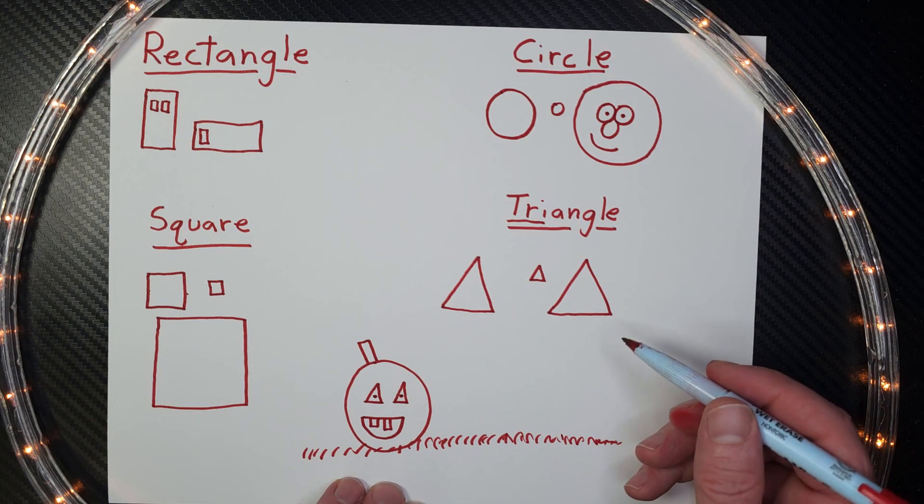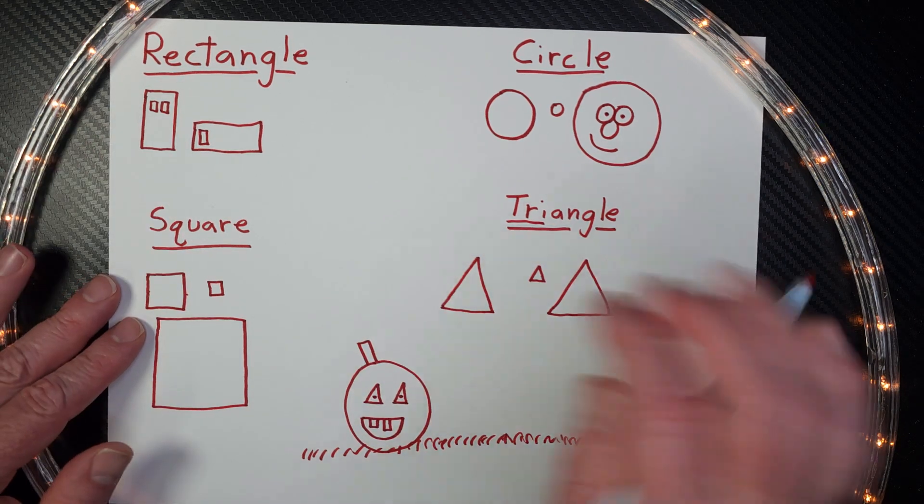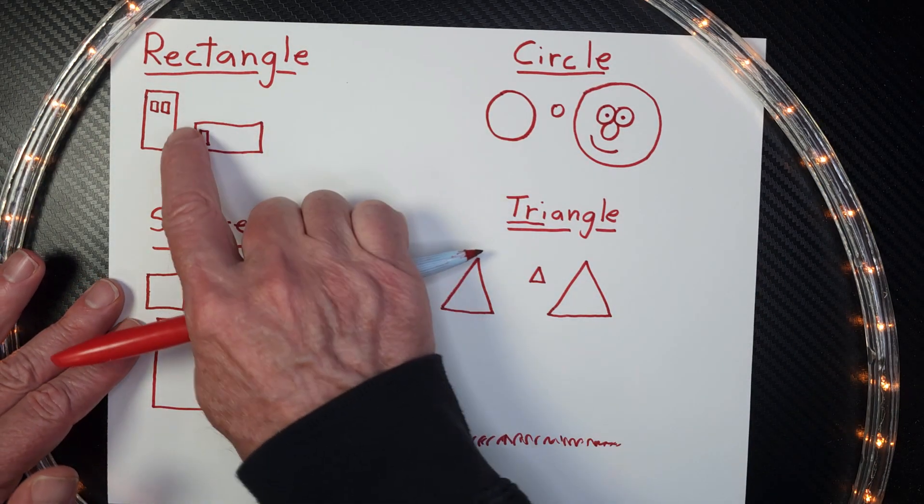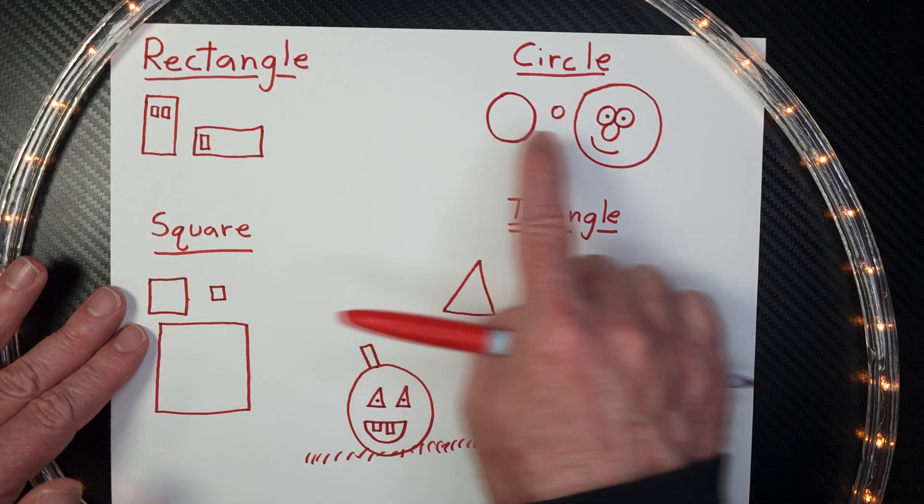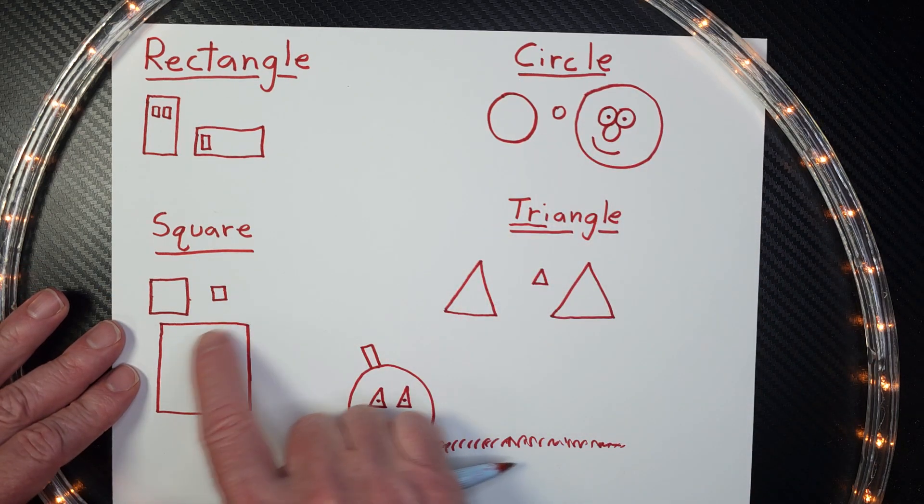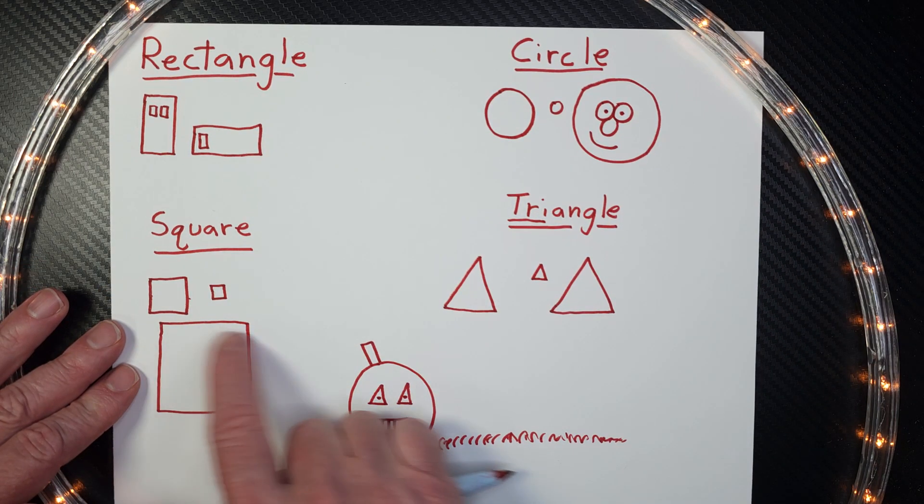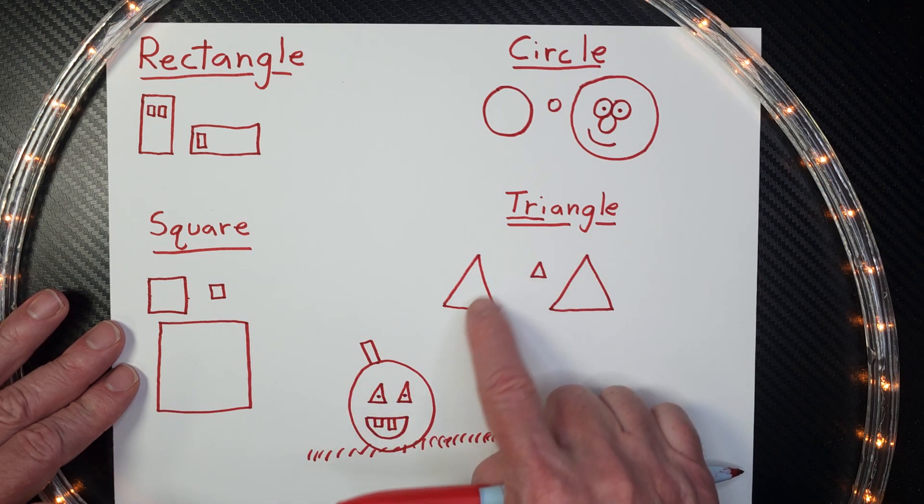Hey, I hope you're having a fun time out there. I hope you're enjoying drawing shapes. Today we learned about the rectangle with four sides and one side is longer than the other. We have the circle and the circles are round. We have the square and that also has four shapes, but they're all equal. And we have our triangle with three sides.